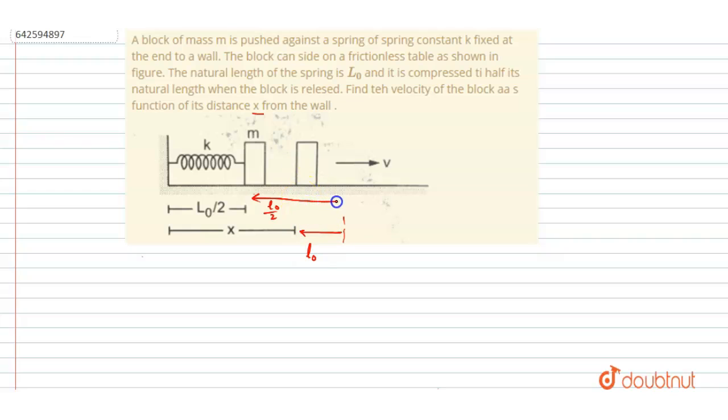Let's suppose this is the distance, this is the natural length. So initially it was L0 by 2 compressed. Now when it is at a distance of x from the wall, it will be L0 minus x compressed. Simple, you can see here.